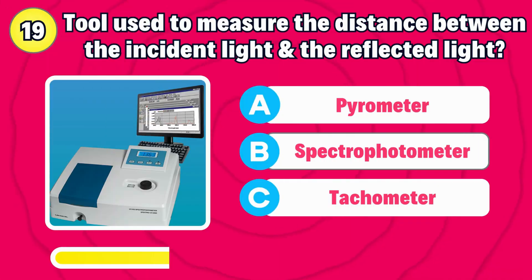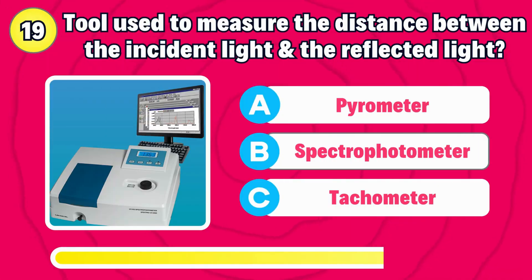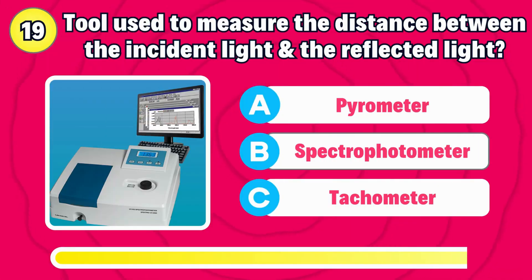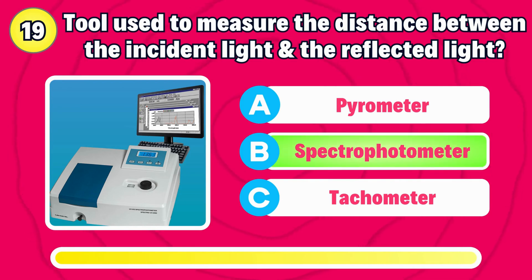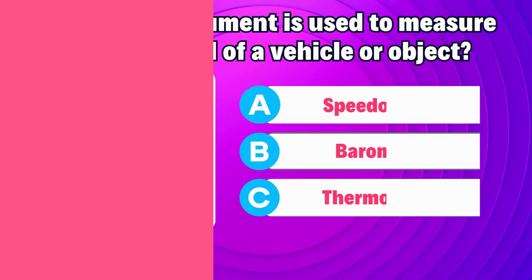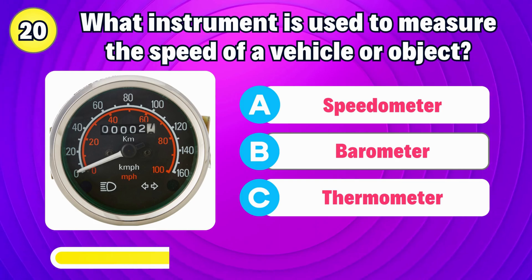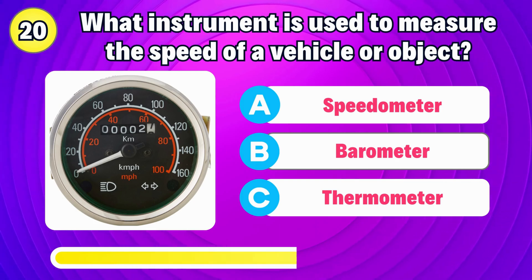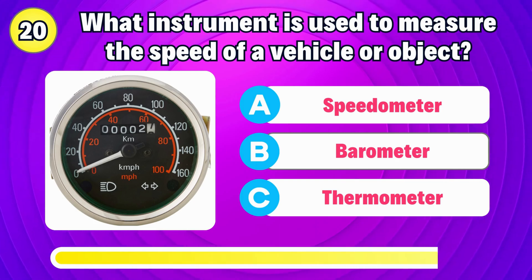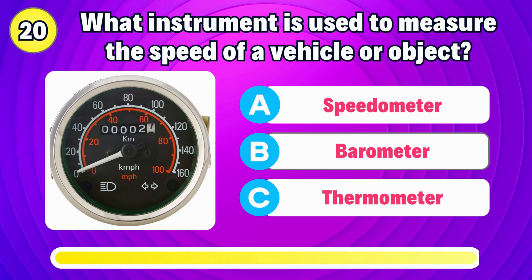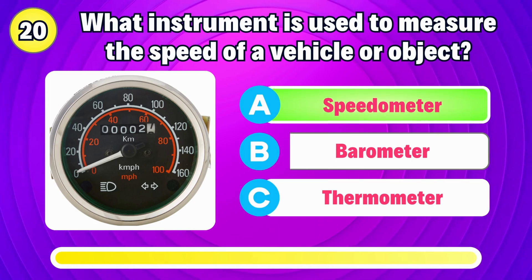What tool is used to measure the distance between the incident light and the reflected light? Right, it's spectrophotometer. What instrument is used to measure the speed of a vehicle or object? Correct, it's speedometer.